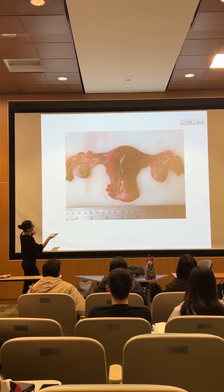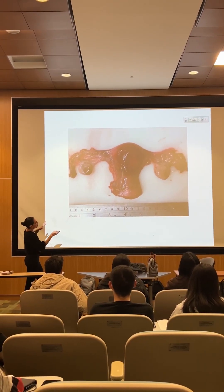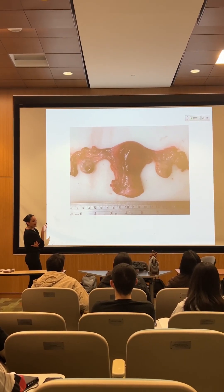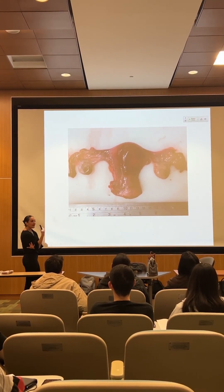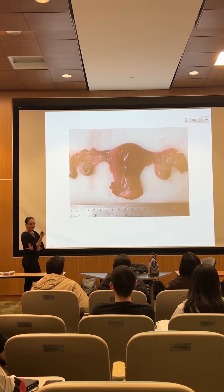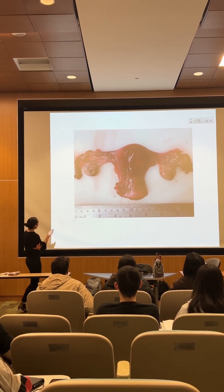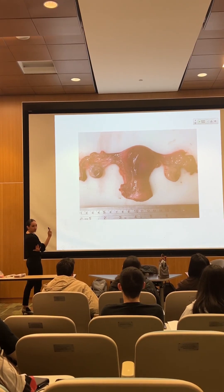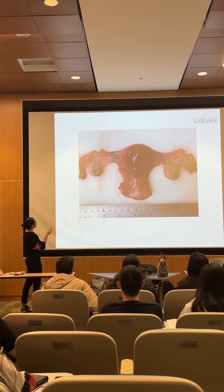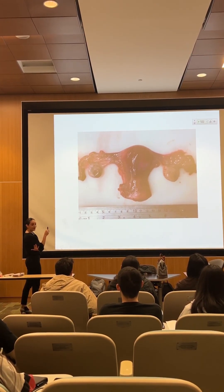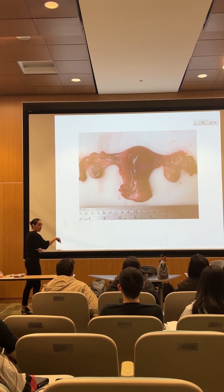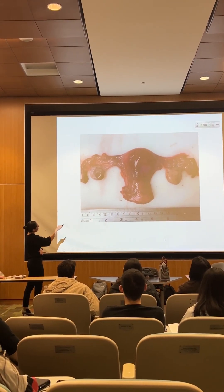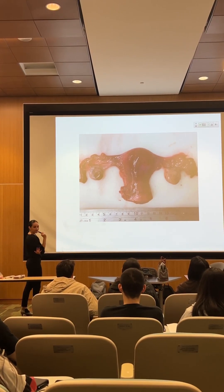These are the fimbriae. You can literally see that the fimbriae are not connected to the ovaries — they are separate, and that's why you can have the ectopic pregnancies that I mentioned before. The ovary will expel the egg into the pelvic cavity, and the fimbriae need to be very attentive to pick it up and move it into the uterine tube, and then the egg will eventually get into the uterine cavity.